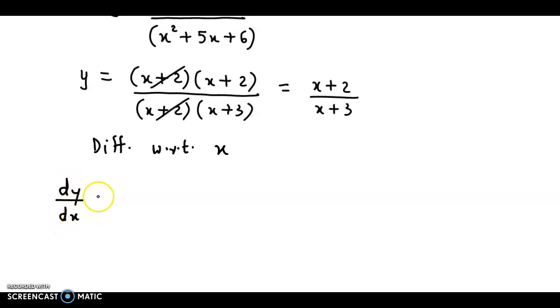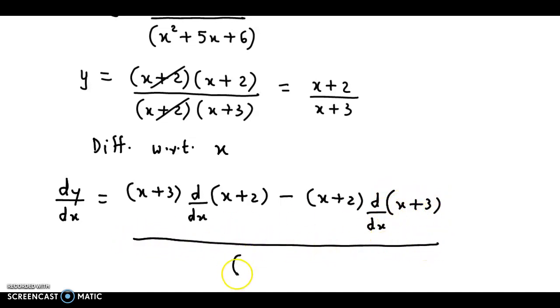So dy/dx equals... Now here we have a quotient rule. We start with the denominator. So we have denominator times derivative of numerator, that is derivative of (x+2), minus numerator times derivative of denominator, that is (x+3), upon the denominator squared, that is (x+3)².